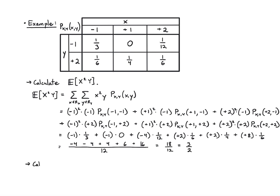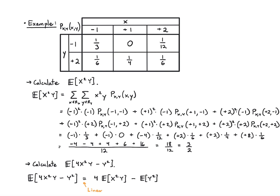Finally, let's say I want to calculate the expectation of four X squared Y minus Y squared. At this point I should recognize that I've done both of these parts separately and can use linearity of expectation. This is the same as four times E of X squared Y minus E of Y squared. Linearity of expectation allows me to split across the minus sign and pull out the four. Plugging in: the first term is three halves and the second is 11 fourths, so it's 24 minus 11 over 4, which is 13 over 4.